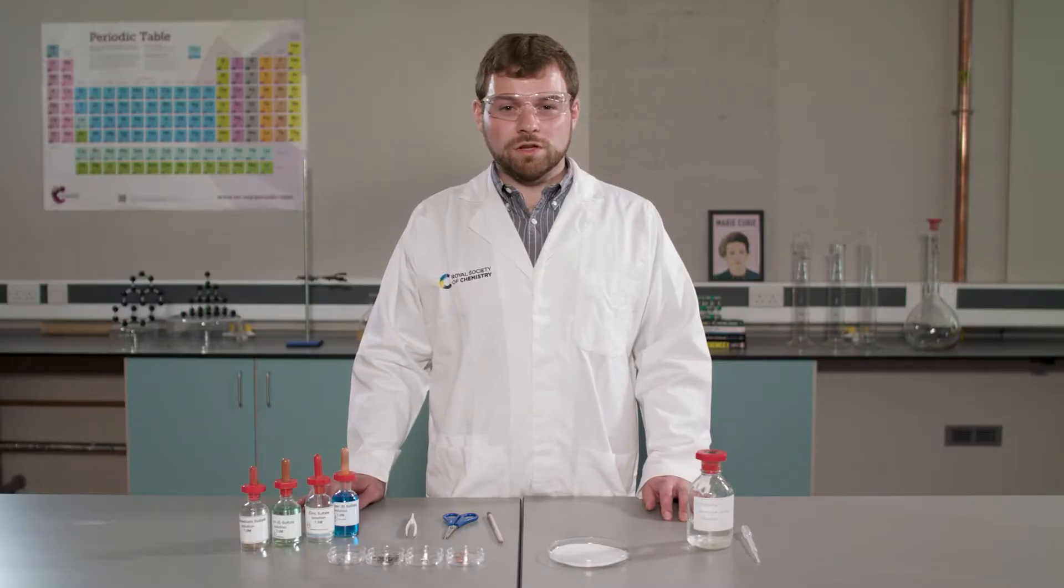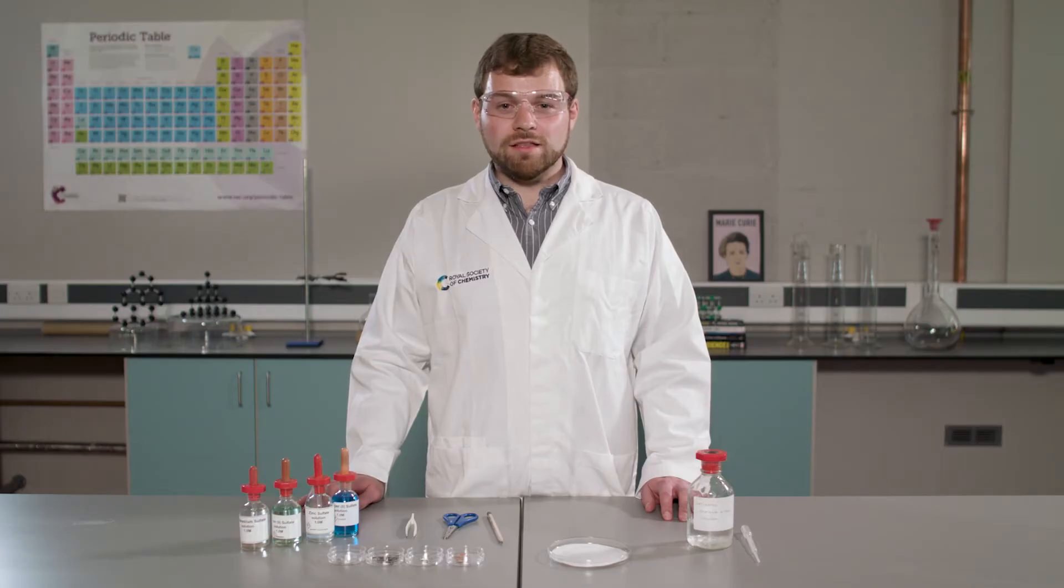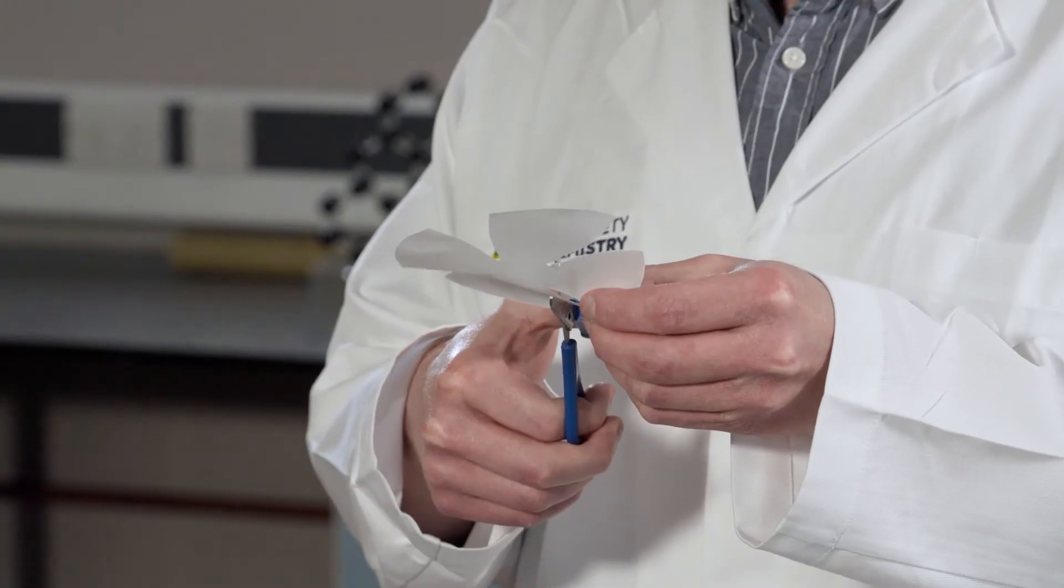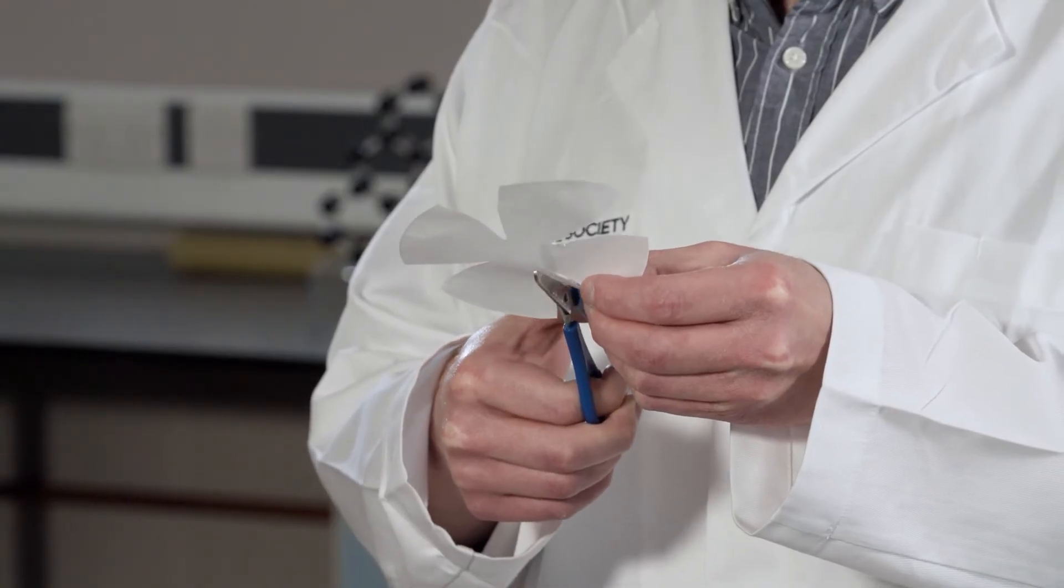Now we have seen one electrochemical cell, we are going to look at multiple cells. Compared to the large scale apparatus we just saw, this micro scale equipment is easy to set up and only uses small volumes of solution. To start with I'm going to cut a flower petal shape out of my filter paper.